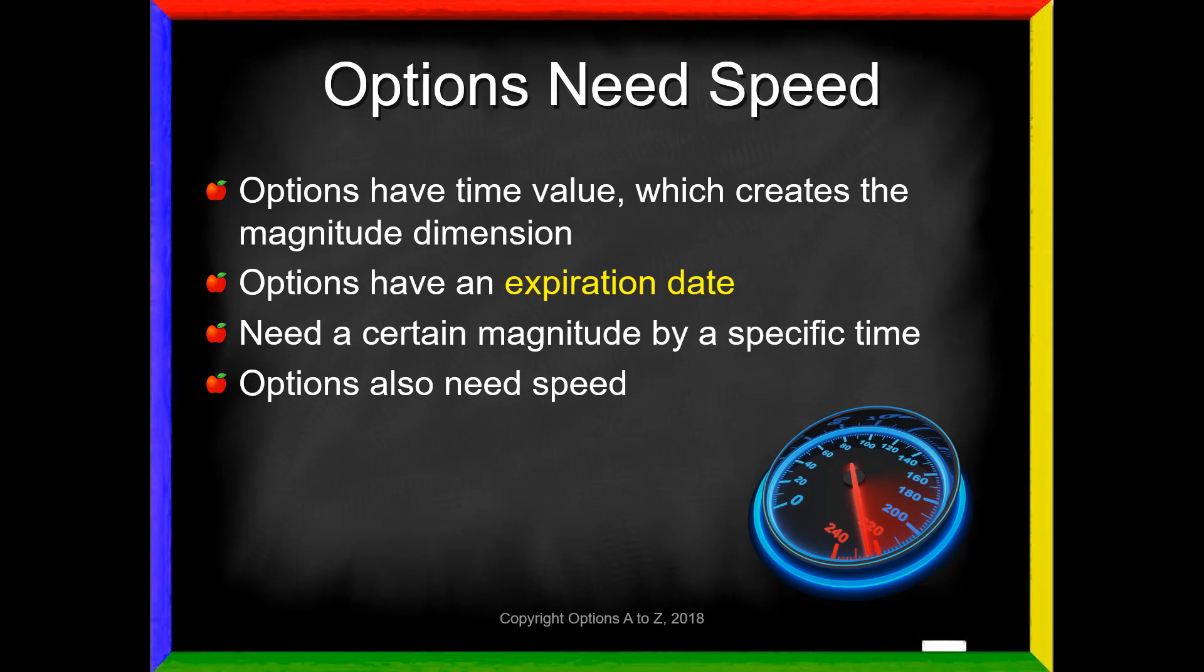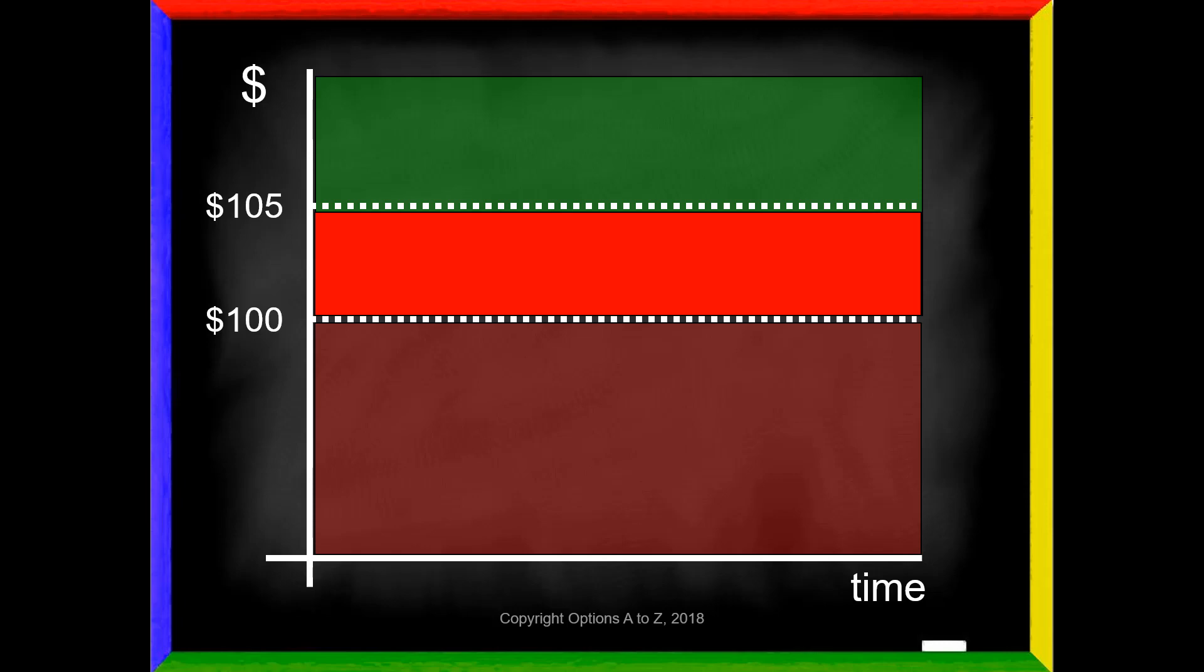So if we go back to our graph here, and let's say that we need the stock to be above $105 at expiration in order to be profitable. However, if we have a cutoff date or an expiration date right here, then this area here becomes an additional area of loss. Because the stock might have gotten above $105, but it did it after the option expired. How many times have that happened to you? You bought an option, it expires worthless, or maybe you just took a loss on it.